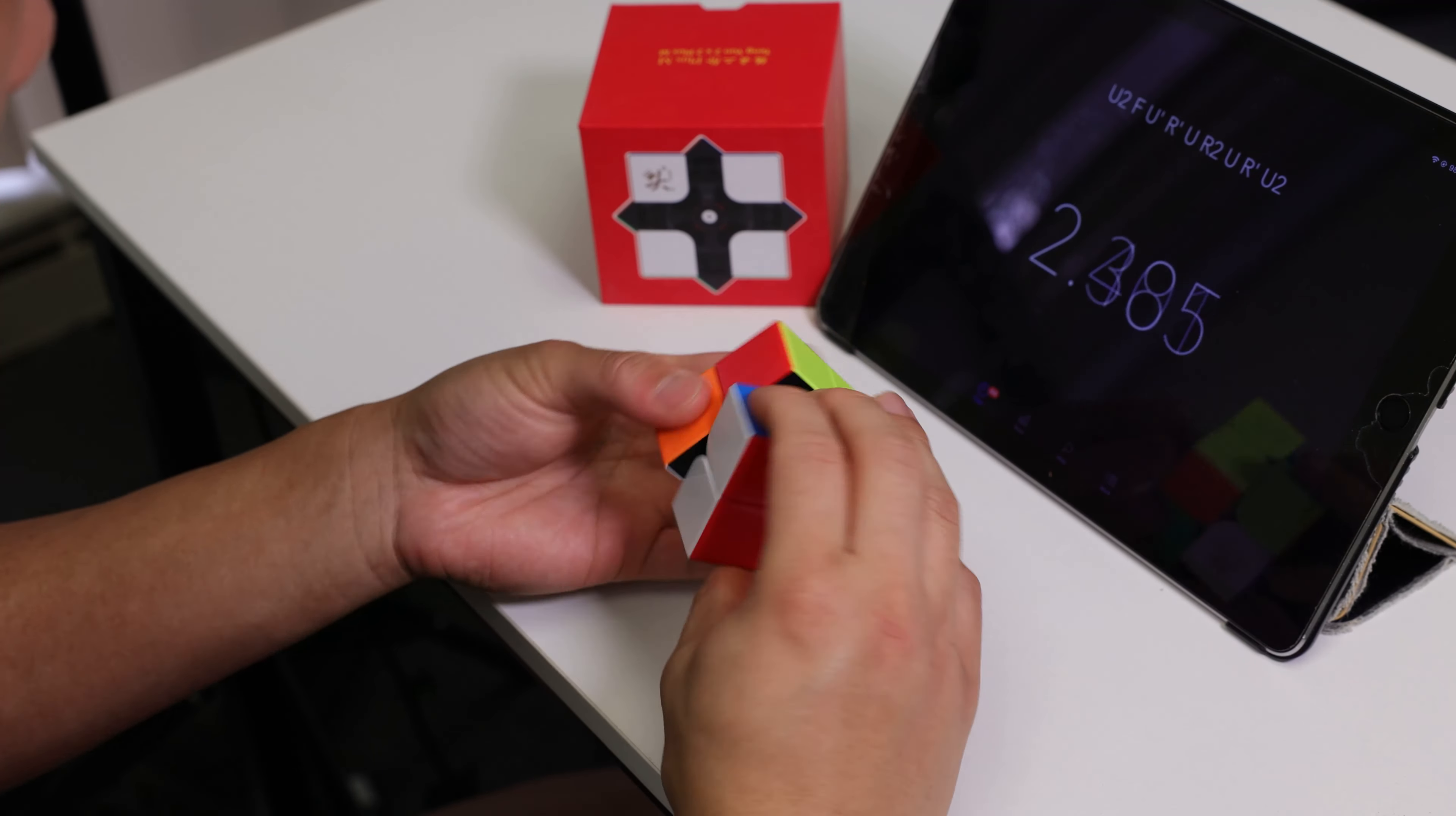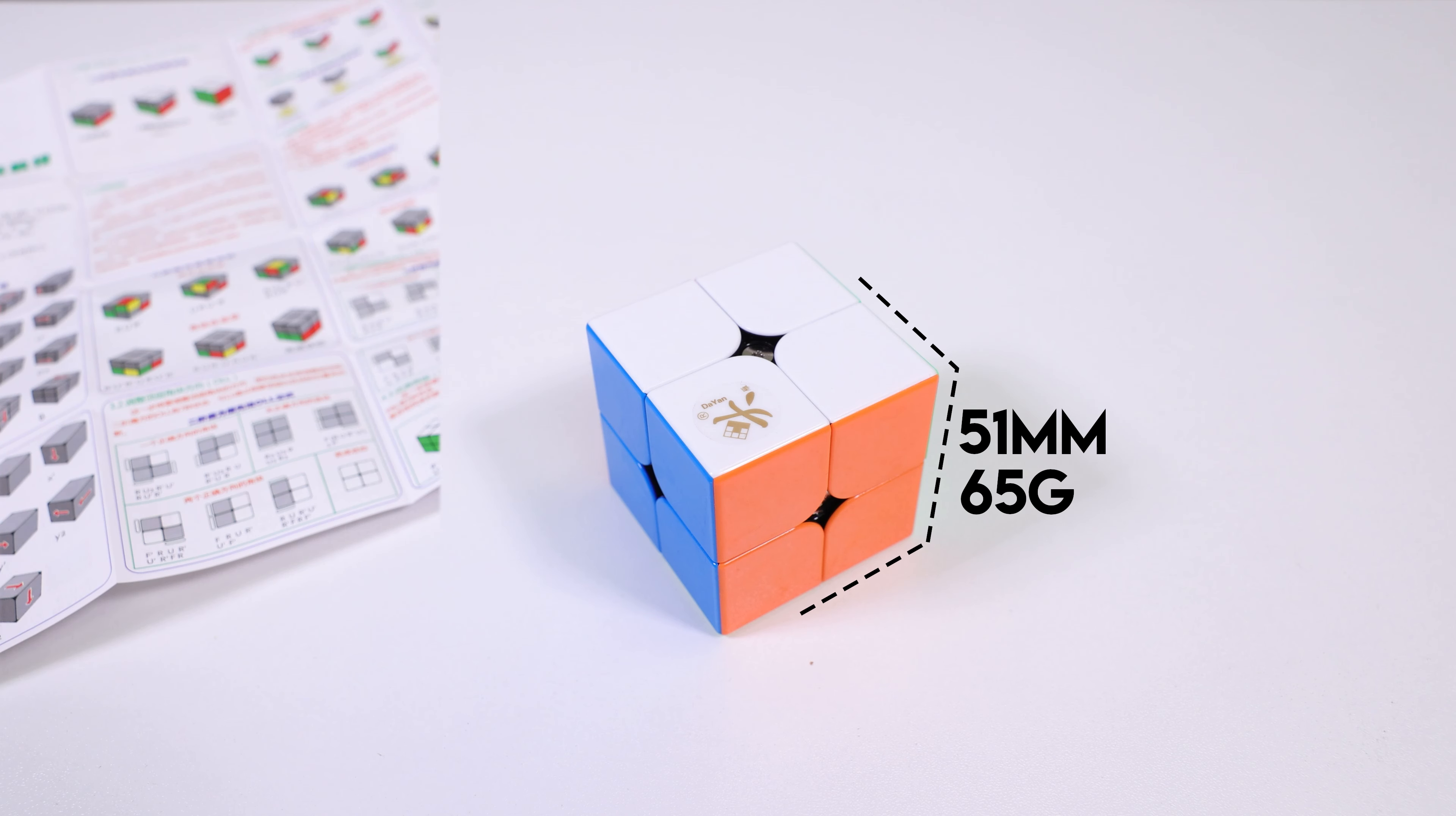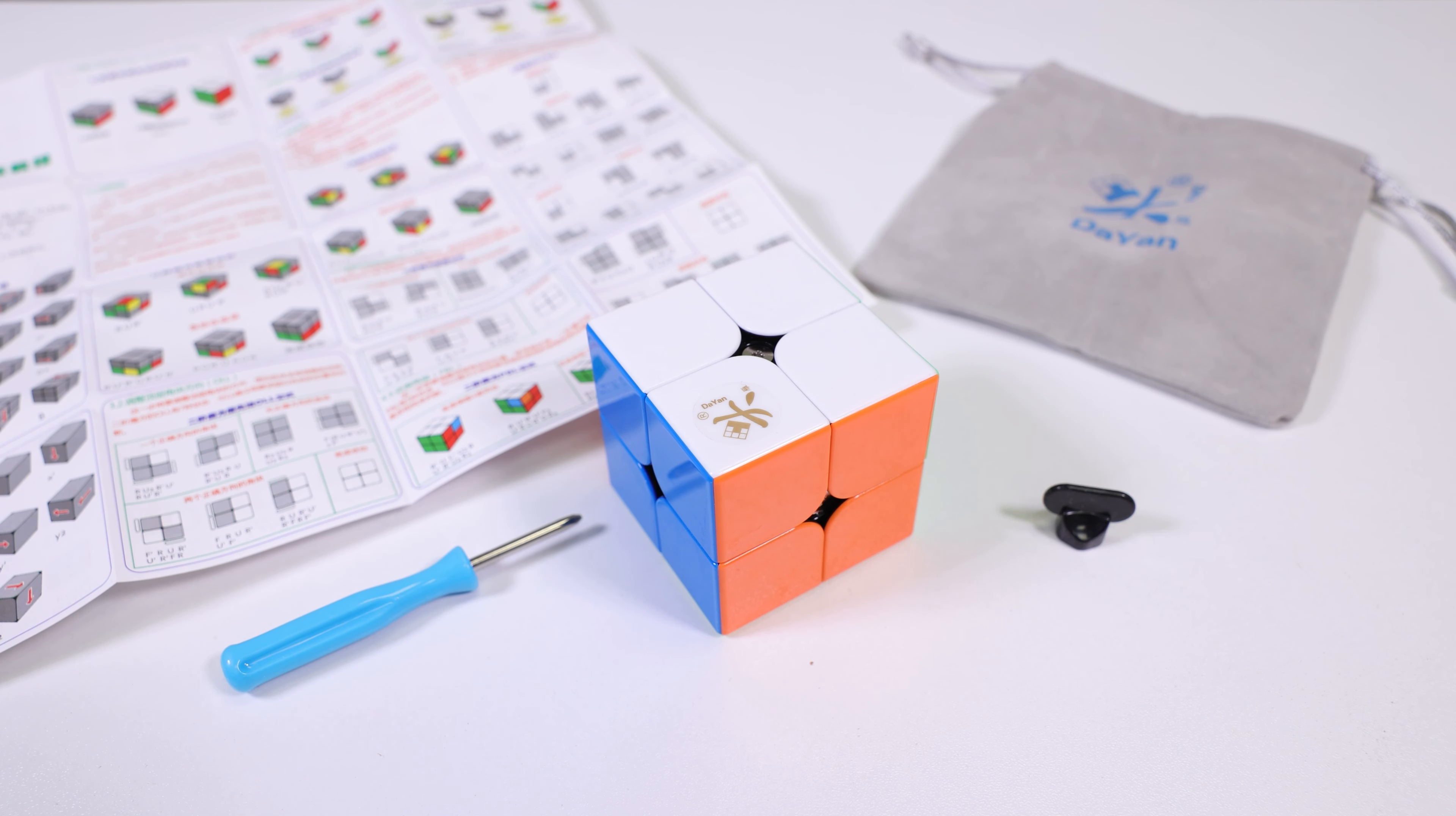Now let's get to know this cube a little better. The TengYun V2 2x2 measures 51mm across and weighs in at around 65g. It comes with a comprehensive 2x2 solving pamphlet that features multiple methods, a DaYan cube bag, a screwdriver, and a magnetic adjustment tool.